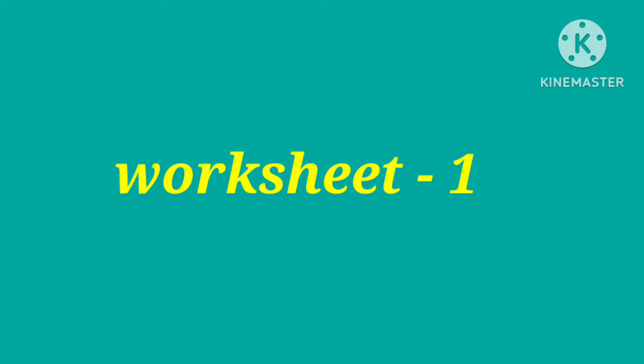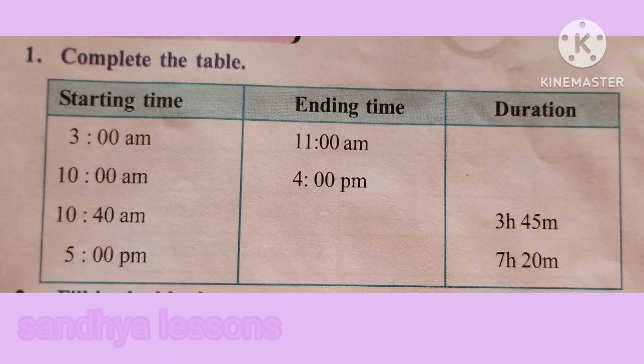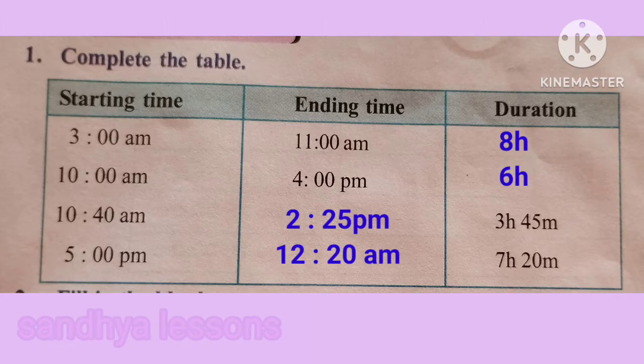Worksheet 1. First question: complete the table. In the table, starting time and ending time are given. We should find the duration. To find the duration, subtract the starting time from the ending time.